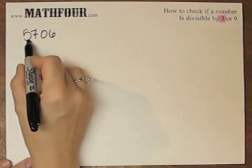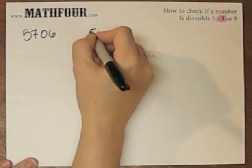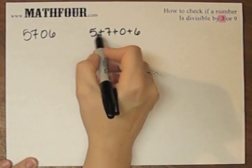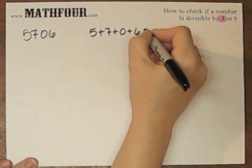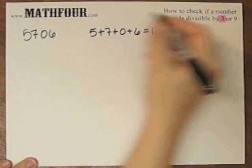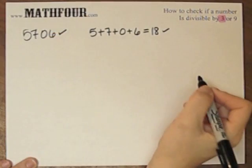So we take all the digits and add them up. So you do 5 plus 7 plus 0 plus 6. So 5 plus 7 is 12, plus 6 is 18, and 18 is divisible by 3, so this is divisible by 3, makes this divisible by 3.